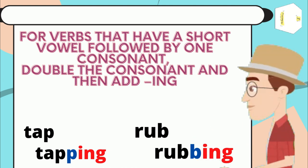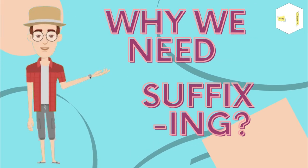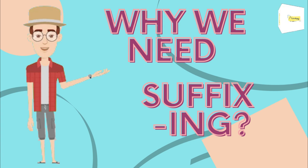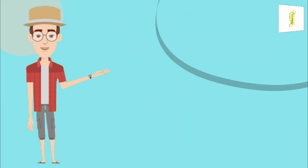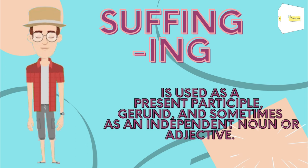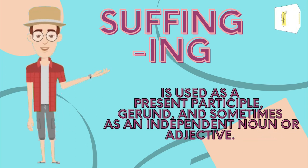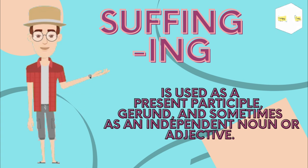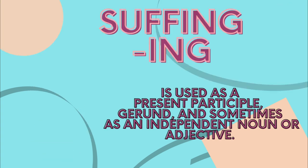I suppose you understand the rules now. Remember, we need the suffix '-ing' because it is used as a present participle, a gerund, and sometimes as an independent noun or adjective. That's it for today — hope you understand. See you in the next video, bye!